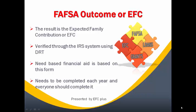It's verified through what's called the DRT or Data Retrieval Tool, which links the IRS system together. It's an important part of the need-based financial aid process. By lowering this number, you will qualify for need-based aid, but also remember that your ability to pay is also considered in the process. It does need to be completed each year as you go through the process to re-qualify you for financial aid.